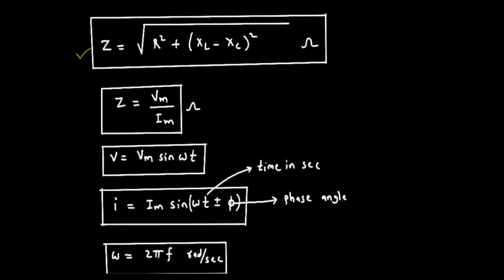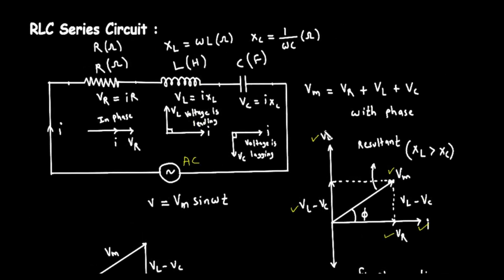And there you have it. We have journeyed from a simple circuit diagram, through the concepts of phase and phasors, to derive the impedance triangle and the key formulas that govern an RLC series circuit. I hope this detailed, step-by-step explanation has made these concepts clear and easy to understand.